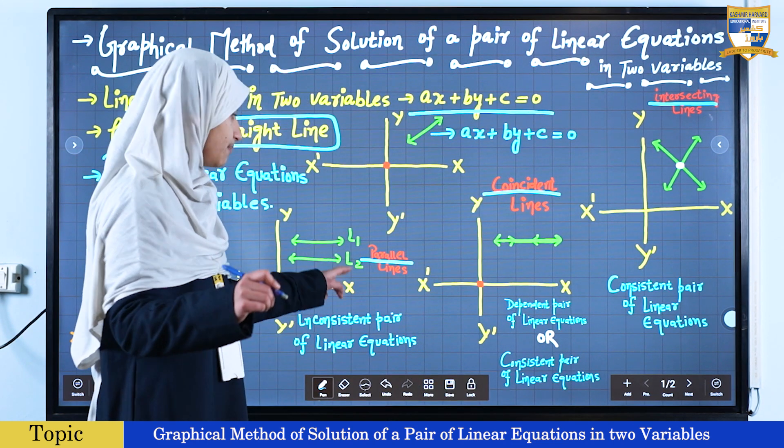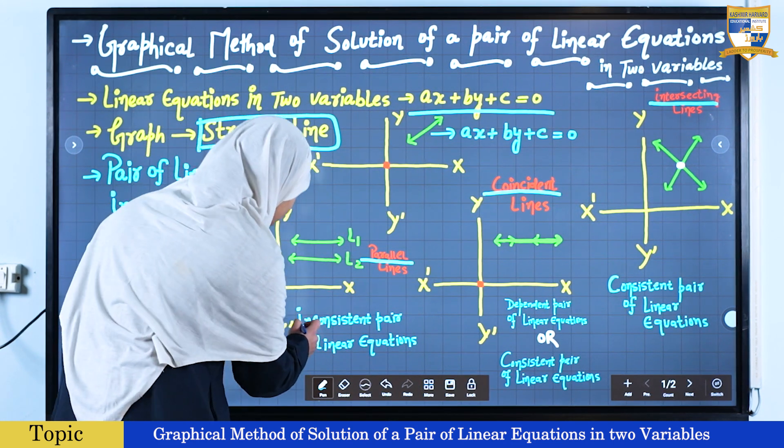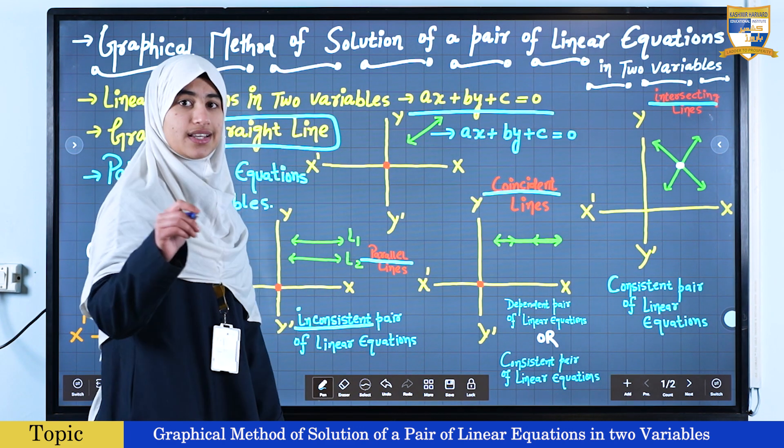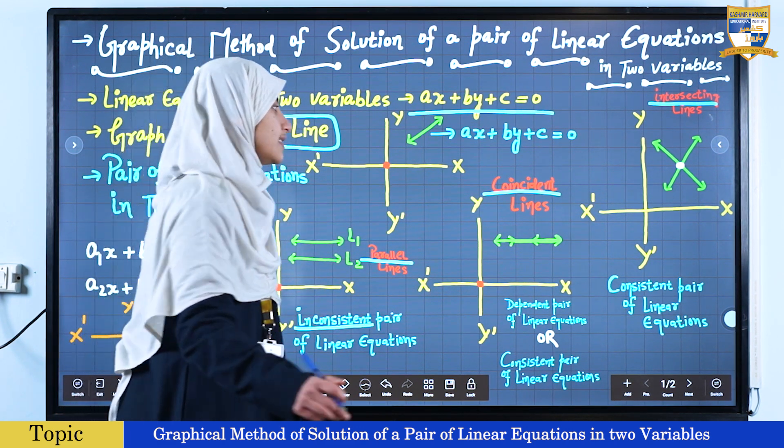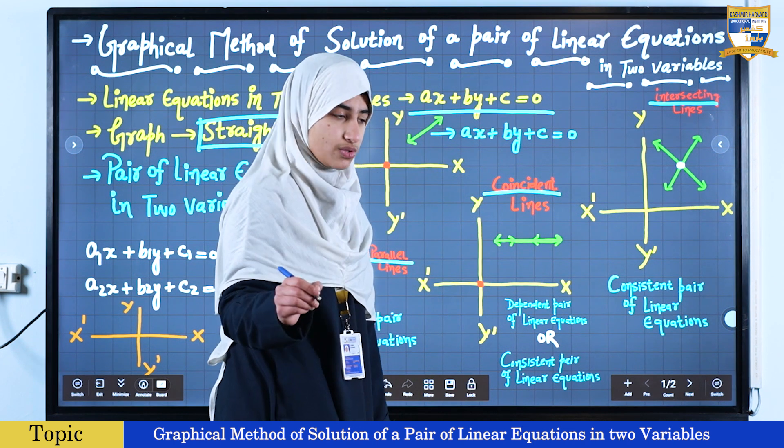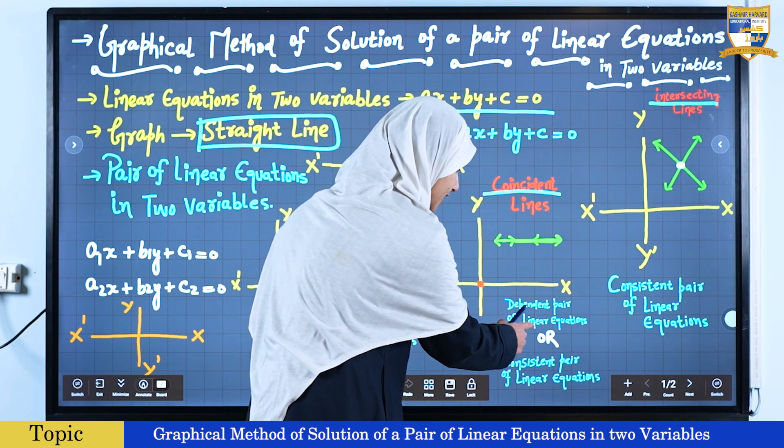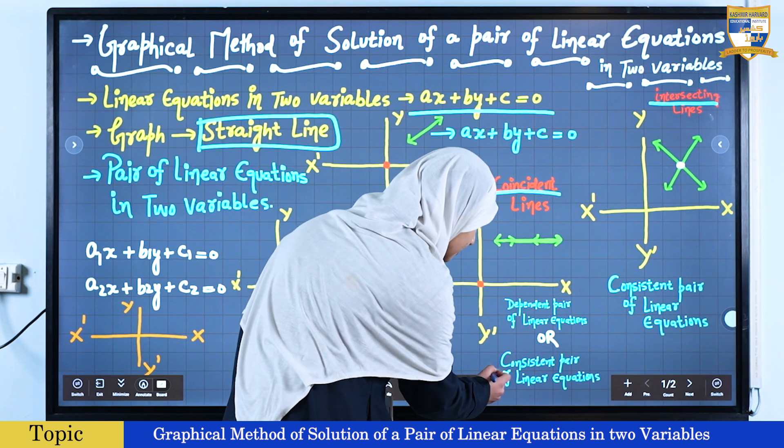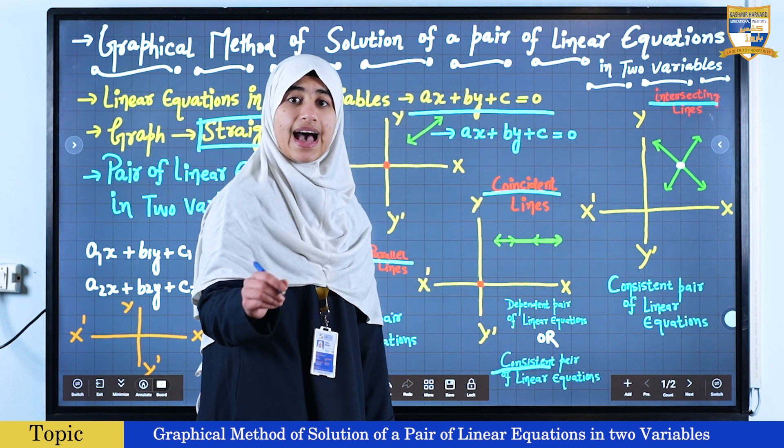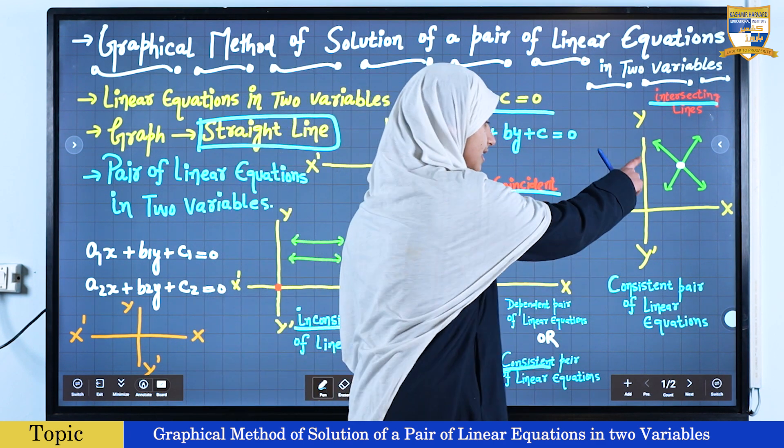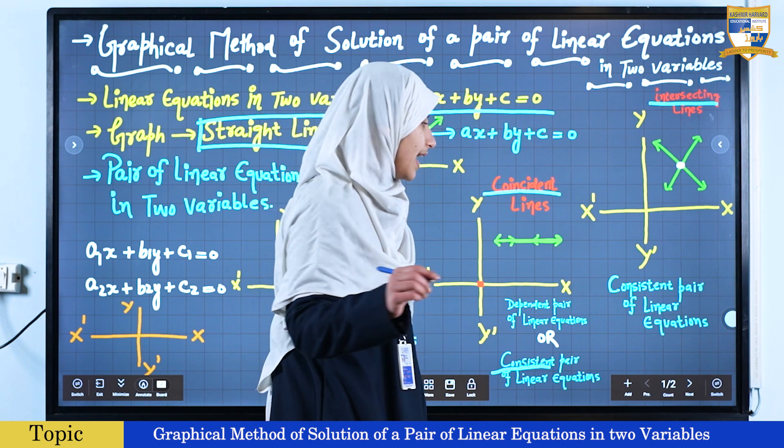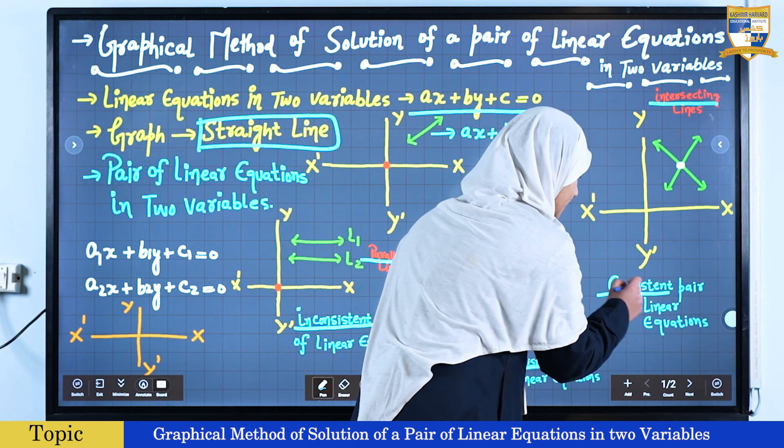In case the lines are parallel, these are also known as inconsistent pair of linear equations. In case the lines are coincident, these are also known as dependent pair of linear equations or consistent pair of linear equations. And in case the lines are intersecting, these are also known as consistent pair of linear equations.